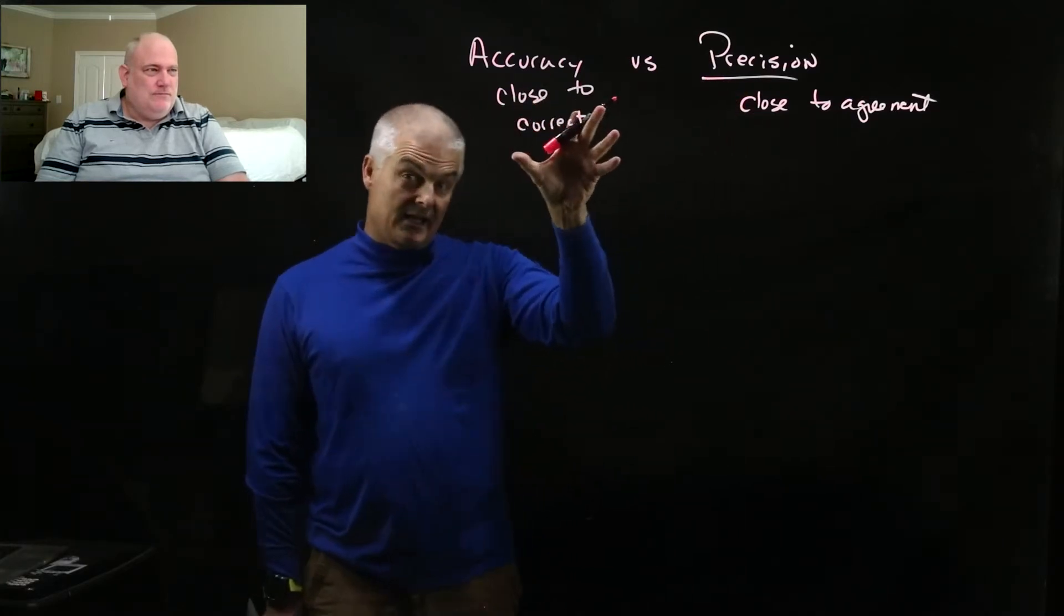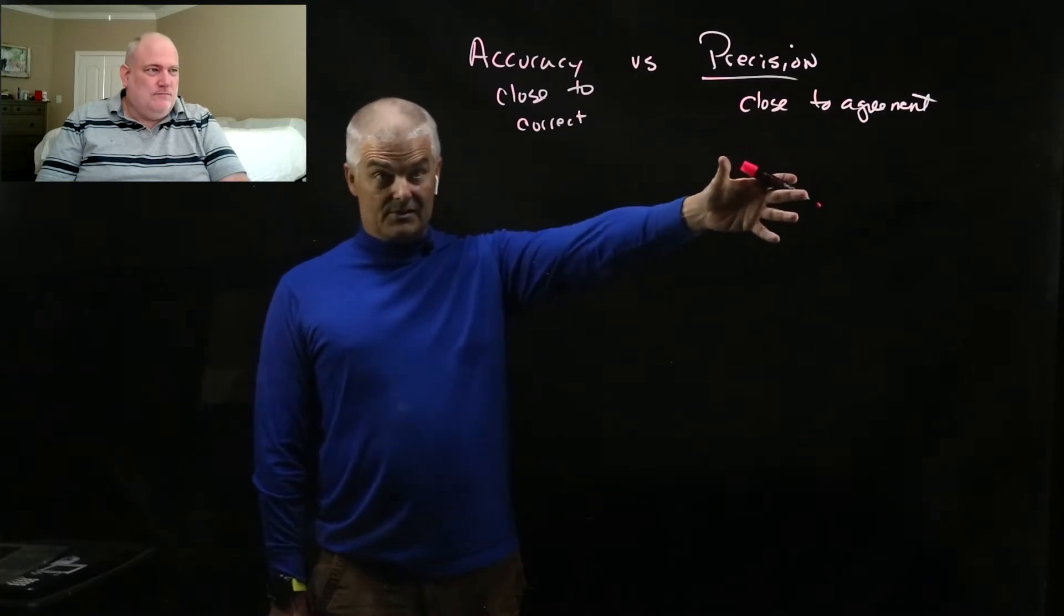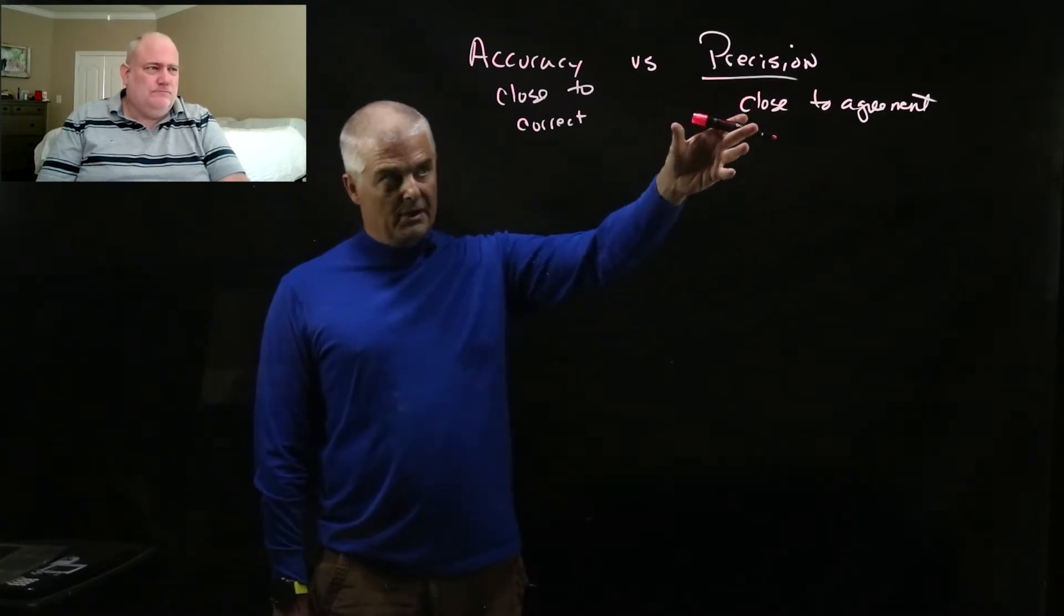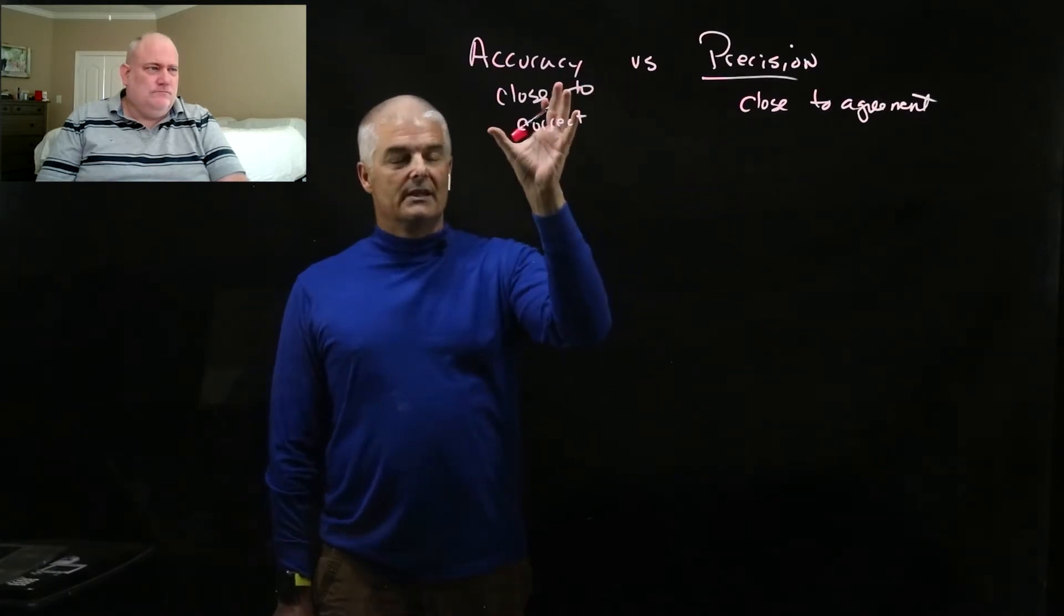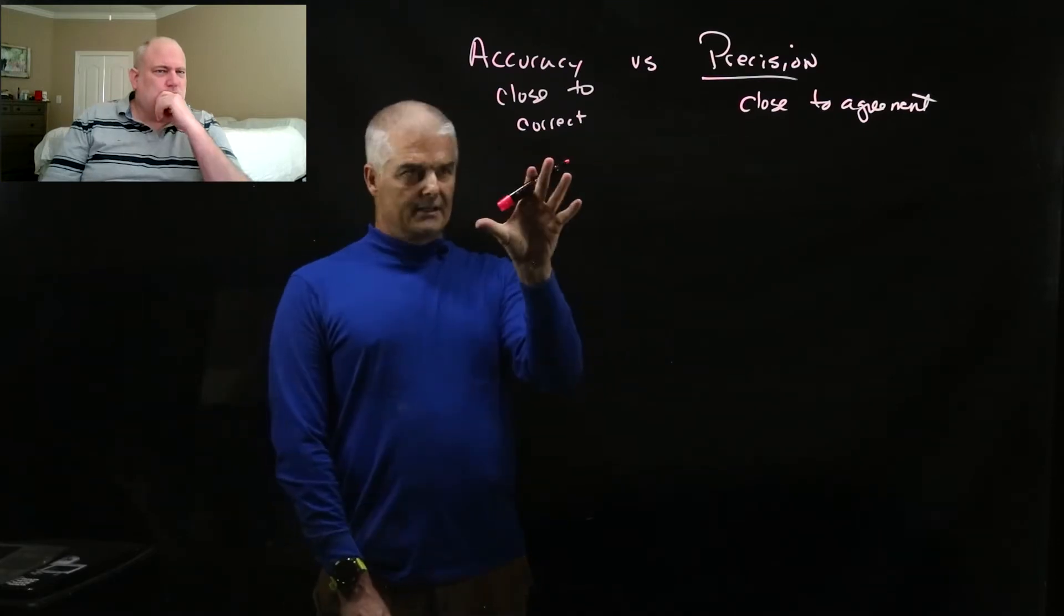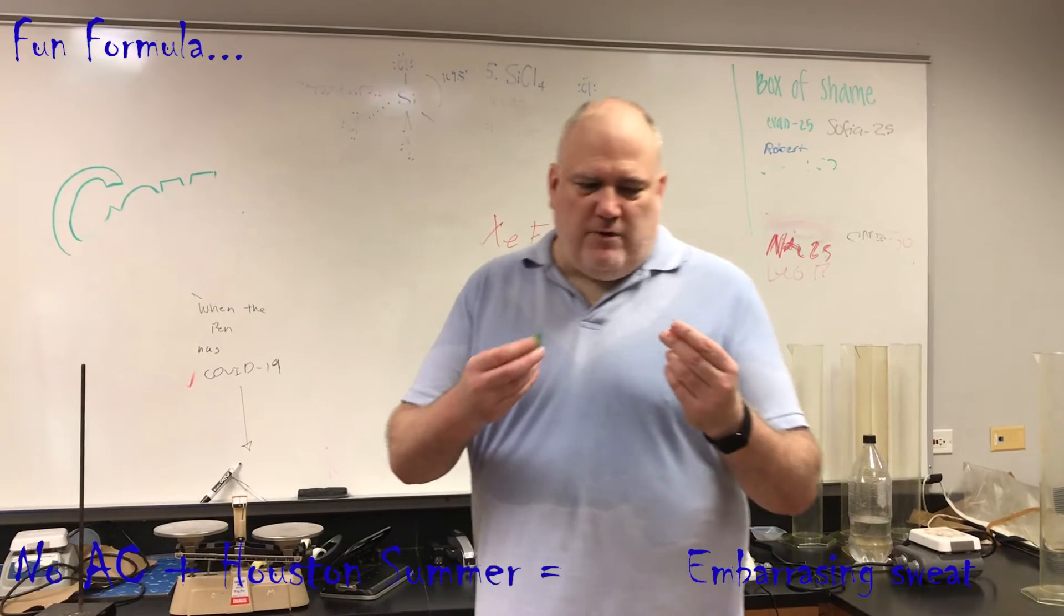So that's precision versus accuracy, and what we really want obviously is something that's both precise and accurate. You can't have something that's precise unless you have multiple measurements. And so we usually believe that we can measure something multiple times using good measuring devices that we're going to get an accurate answer. Isn't always the case. It depends on the devices that you're using to measure them. So that leads us to, how do we know something is accurate or not? Let's watch this video.